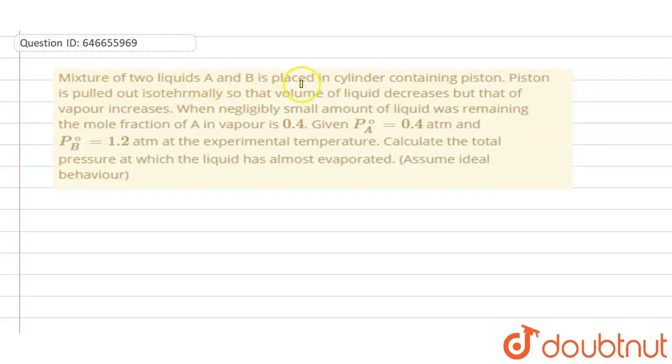Mixture of two liquids A and B is placed in cylinder containing piston. Piston is pulled out isothermally so that volume of liquid decreases but that of vapor increases. When negligibly small amount of liquid was remaining, the mole fraction